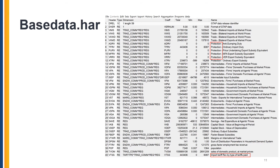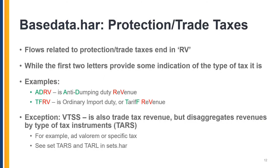We now turn to flows related to trade taxes. These coefficients end in the letters RV to indicate that this is a revenue, while the first two letters provide some helpful indication about what type of trade tax it is. For example, revenue from anti-dumping duties is contained in the coefficient ADRV — the RV tells us this is a trade tax, and the AD identifies it as an anti-dumping tax. TFRV is another example: this is revenue from ordinary import duty, otherwise simply called tariffs, hence the TF which stands for tariff. The one exception is VTSS, which is also trade tax revenue, but instead of differentiating between types of taxes, it differentiates between types of tax instruments, for example ad valorem or specific taxes.